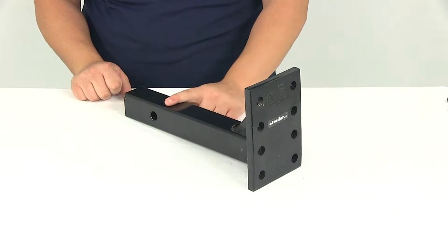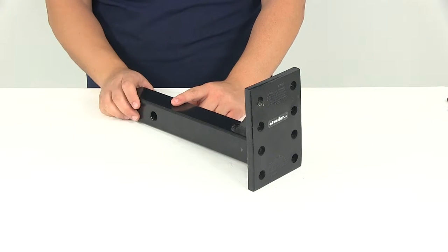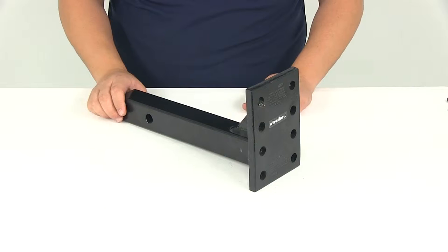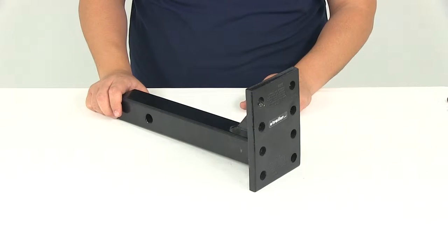This portion here is going to be the portion that slides into your 2 inch by 2 inch hitch. You're going to slide it in until you get your pin holes to line up with one another, and then you'll need to install the hitch pin and clip or a hitch pin and lock, and those items are going to be sold separately.